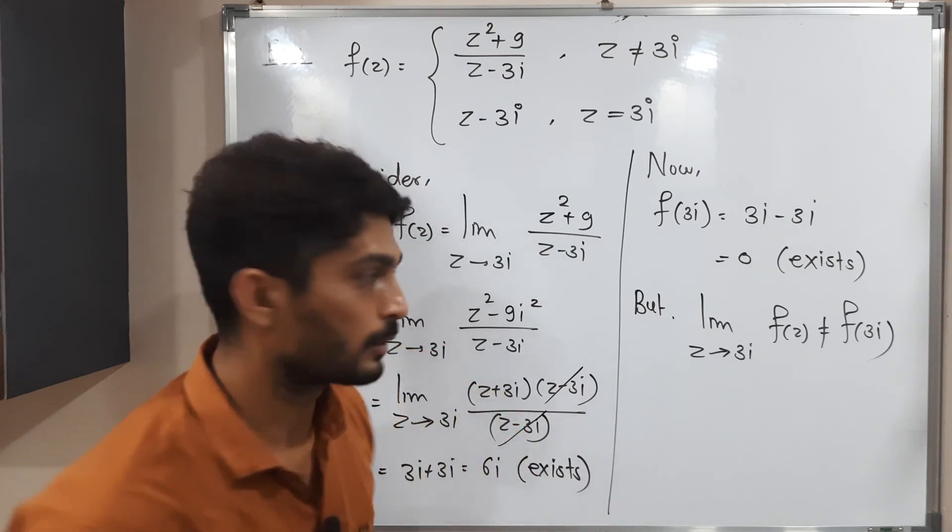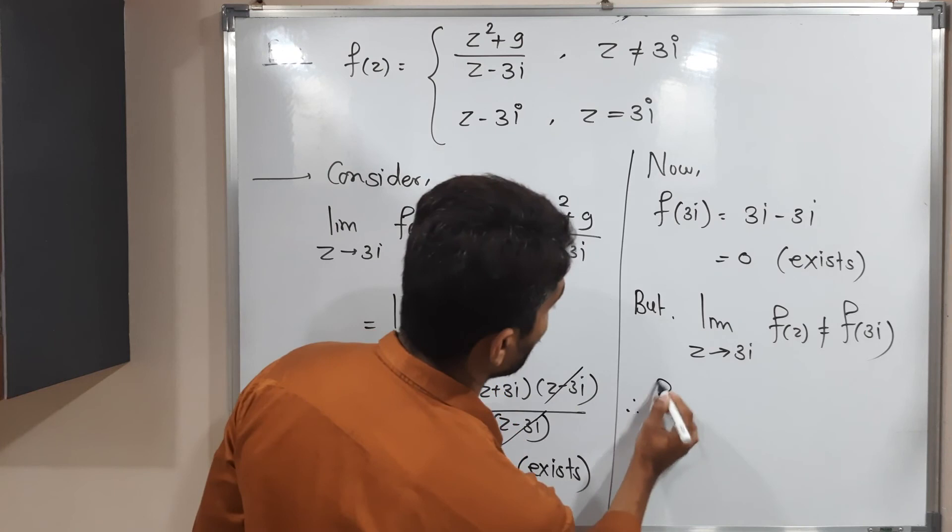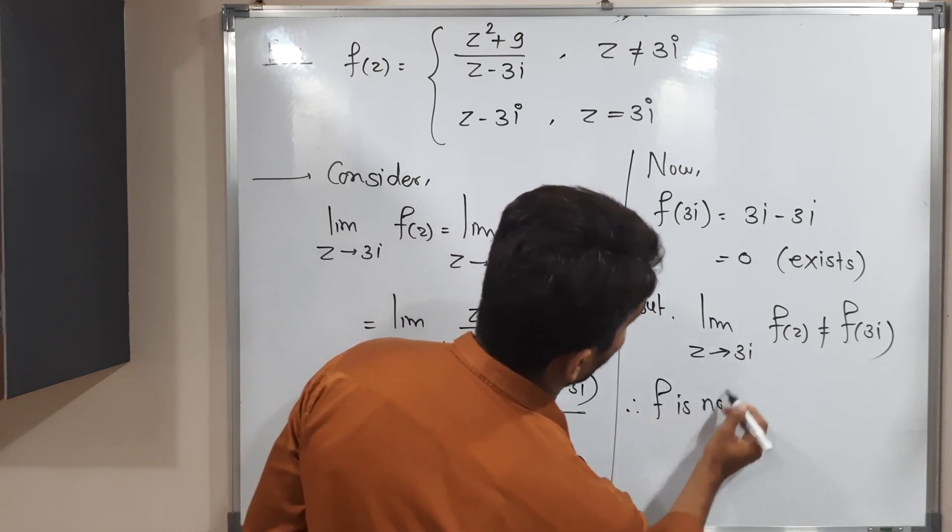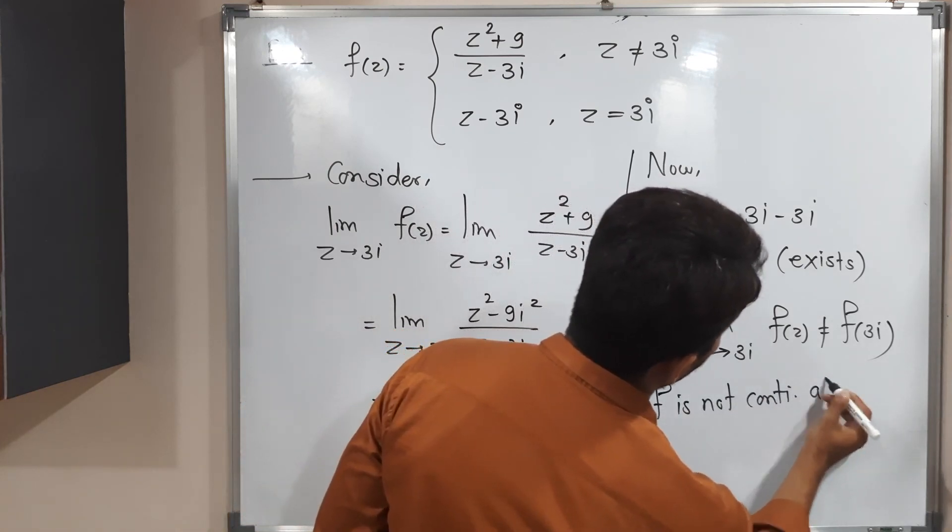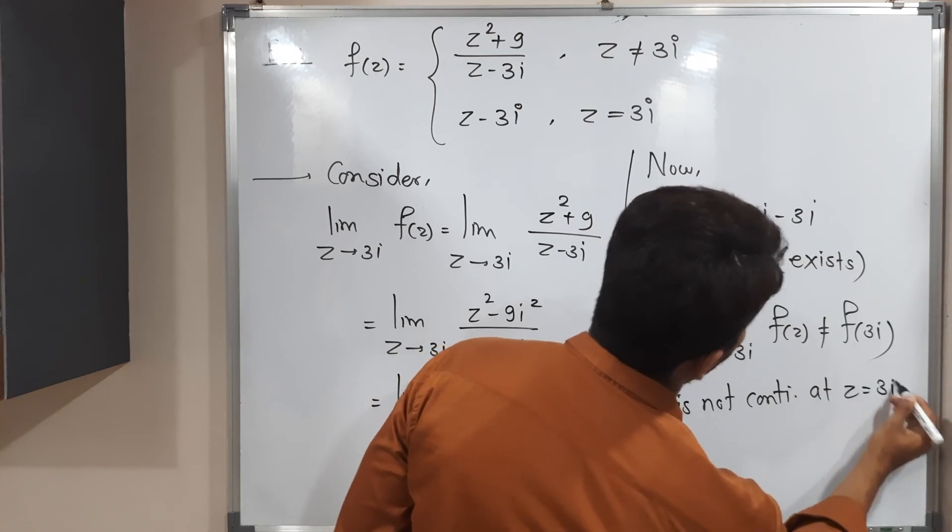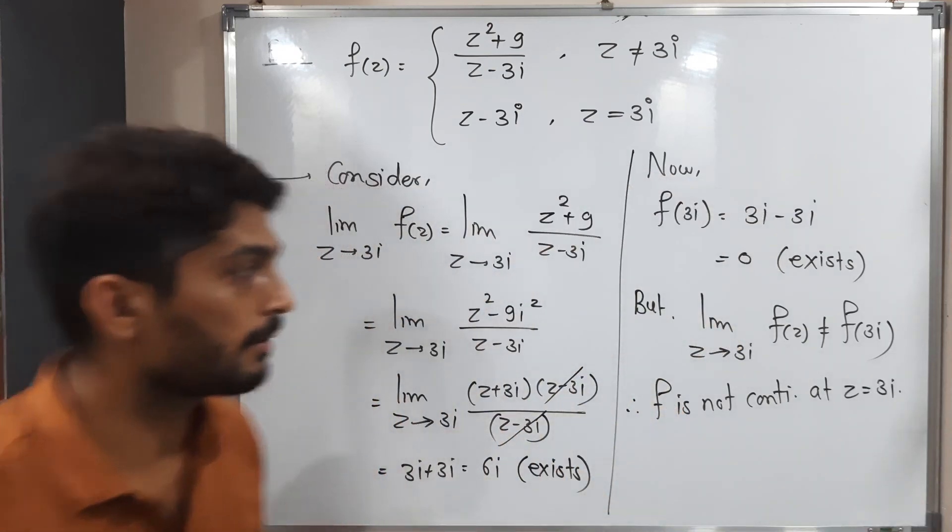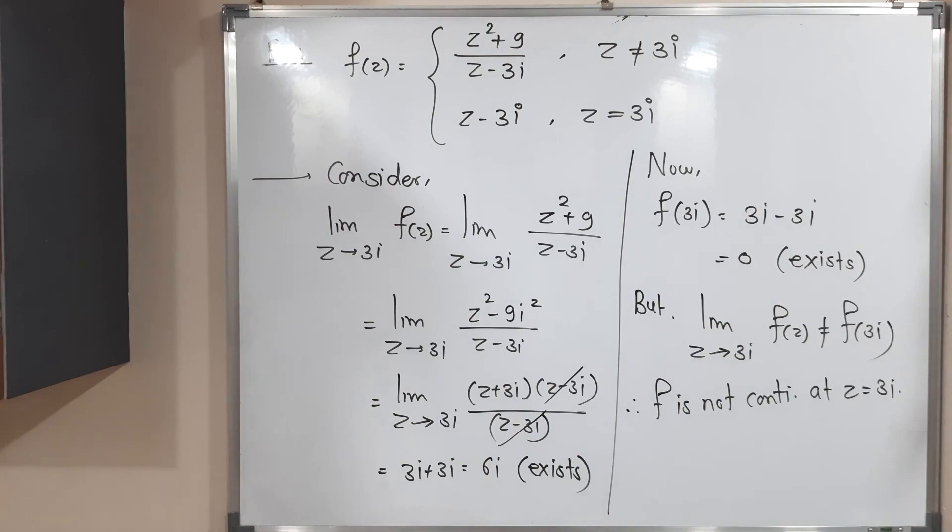So that's why we have to declare f is not continuous at z is equal to 3i. So therefore, f is not continuous at z is equal to 3i. In this way, we completed this example. Make a screenshot of it, then we will stop. Thank you. Bye-bye.